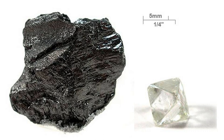The atoms of carbon can bond together in different ways, termed allotropes of carbon. The best known are graphite, diamond, and amorphous carbon.